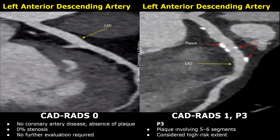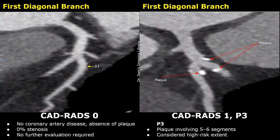Now we have a case showing a plaque burden of P3. P3 is when plaque involves five to six segments of the coronary arteries. We see plaques in the proximal and middle segments of the left anterior descending artery — that is two segments — and the stenosis is mild, less than 25%. Plaque is also present in the first diagonal branch, which is fully considered as one segment and is not divided into proximal, middle, or distal segments. Including this artery, we have three segments where plaque is present, and the stenosis is less than 25%.